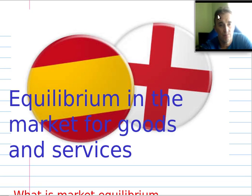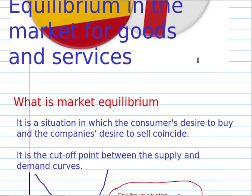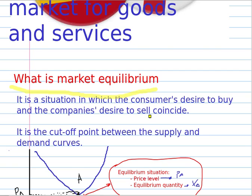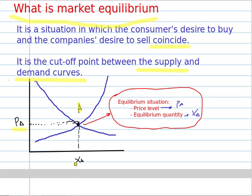Let's go. When we want to work about the equilibrium in the market, the first question is: what is the equilibrium situation? It is a situation in which the consumers' decision to buy and the companies' decision to sell coincide. It is a cutoff point between the supply and the demand curves — this is the situation at point A. The equilibrium price and the quantity of equilibrium.